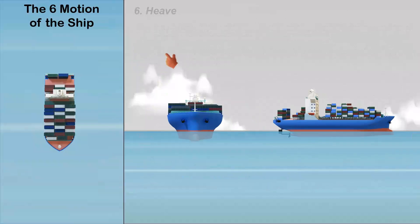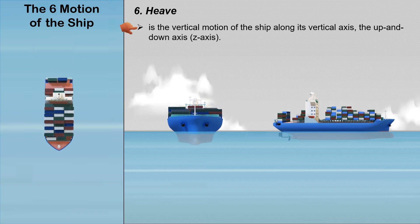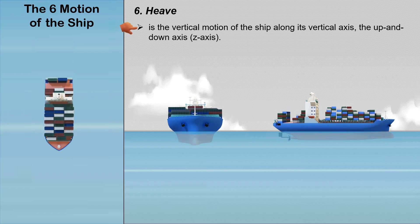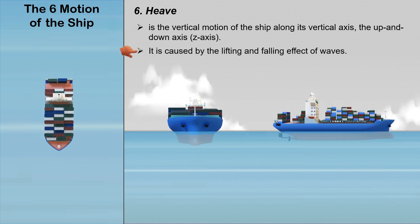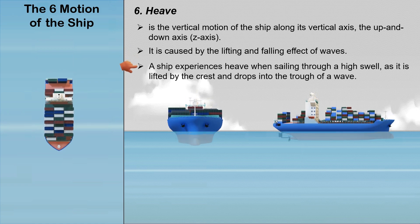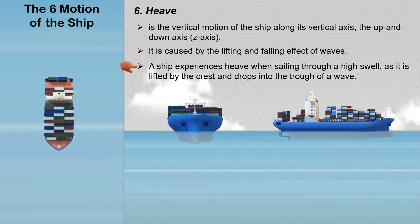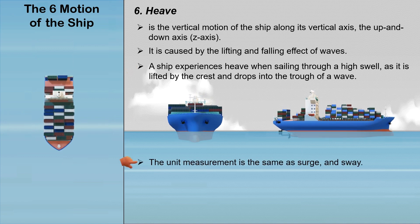Heave is the vertical motion of the ship along its vertical axis, the up and down axis, or the z-axis. It is caused by the lifting and falling effect of waves. A ship experiences heave when sailing through a high swell, as it is lifted by the crest and drops into the trough of a wave. The unit of measurement is the same as surge and sway.